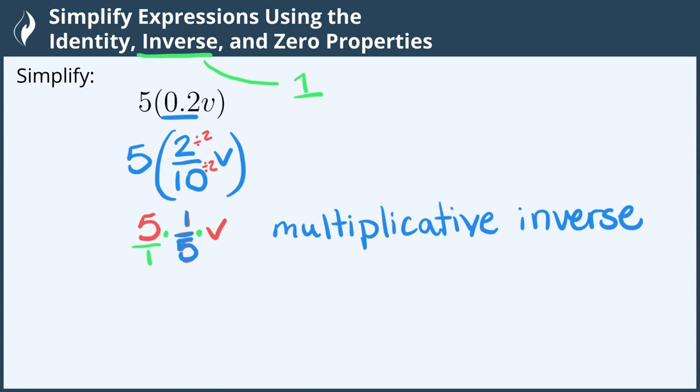And here I have 5 times 1 fifth. 5 times 1 is 5. 1 times 5 is 5. 5 divided by 5 is 1, which gives us 1.